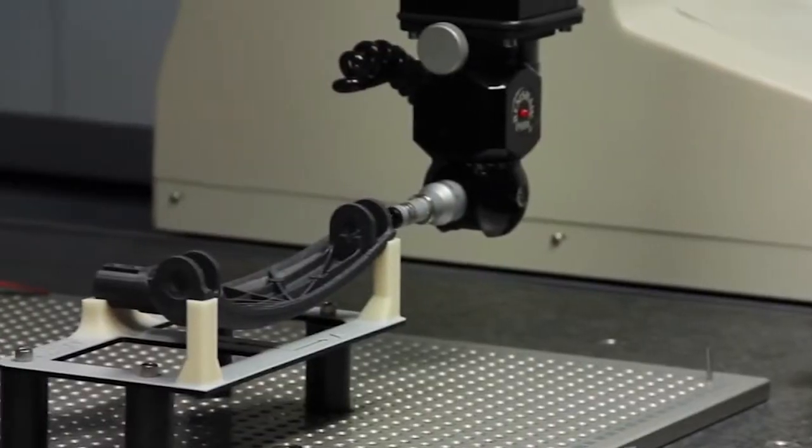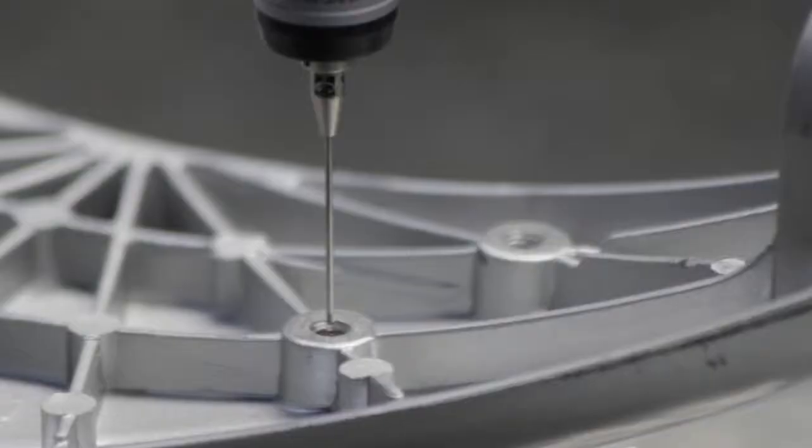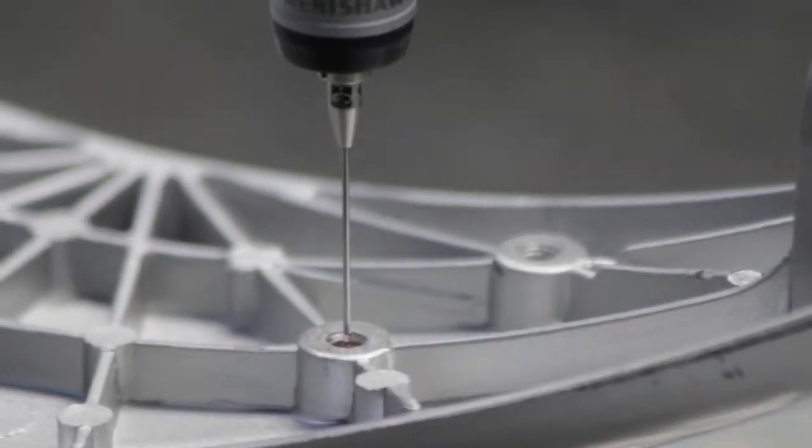Now with FDM we can make the fixtures, we can make prototypes of the actual parts before the molds are even made. And then when the parts come in the door from the actual mold I'm ready to go. I can bolt the fixture on, put the part on, press the go button on the CMM and I can knock all the parts down to maybe two days.